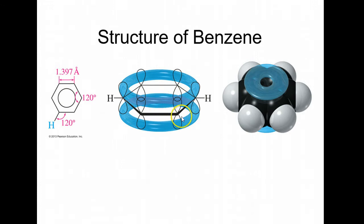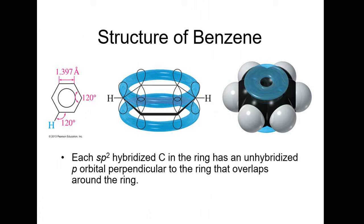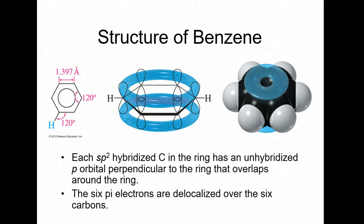The carbons on benzene are all sp2 hybridized, and you have p orbitals that are all parallel to each other. The electrons inside them are actually being shared throughout all the p orbitals, on top and bottom. It's kind of like an electrical circuit — electrons are able to resonate all the way around the whole molecule. That's one of the major things that makes a compound aromatic. Each sp2 hybridized carbon in the ring has an unhybridized p orbital perpendicular to the ring but parallel to each other, and they overlap. So the six pi electrons are delocalized over the six carbons.